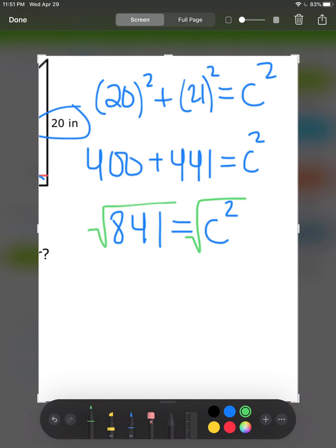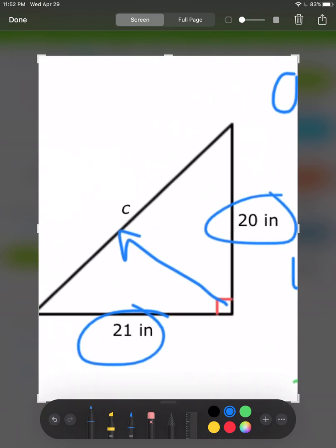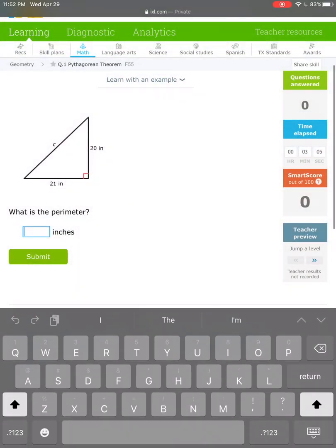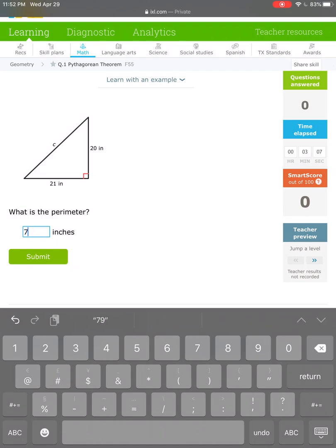The square root of 841 is 29. I definitely used a calculator for that and I suggest you do the same. So C equals 29. Now since we know C is 29, we can find the perimeter. The perimeter is just adding up all the sides. So 29 plus 20 plus 21 gives me a perimeter of 70 inches.